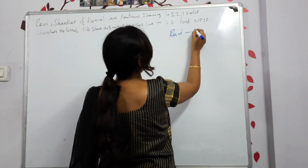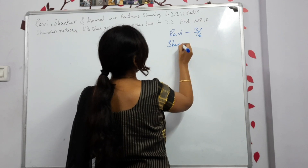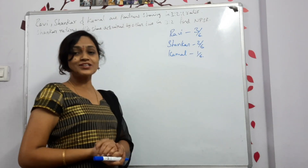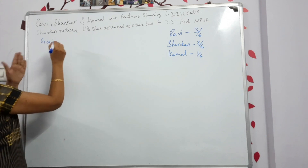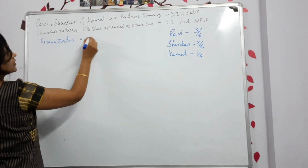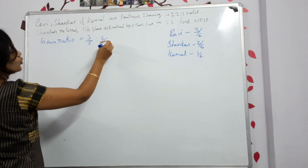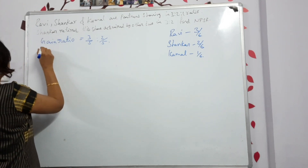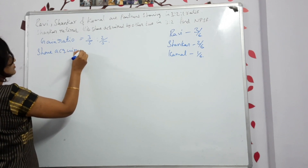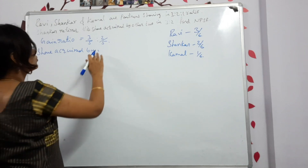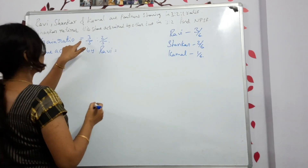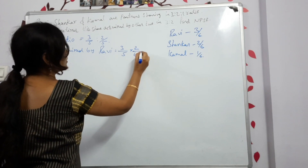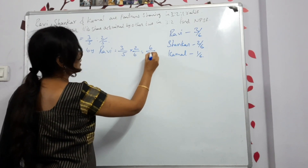Let's see the old shares: Ravi's share = 3/6, Shankar's share = 2/6, Kamal's share = 1/6. The gain ratio between Ravi and Kamal is 3:2, meaning 3/5 and 2/5. Now find the share acquired by Ravi: gain ratio 3/5 multiplied by Shankar's share 2/6 = 6/30.